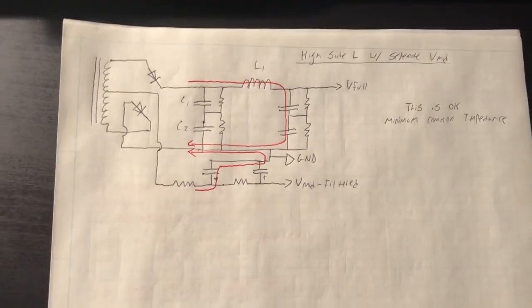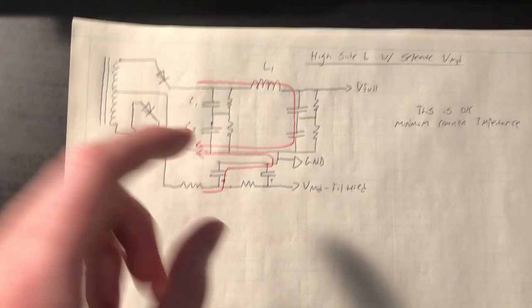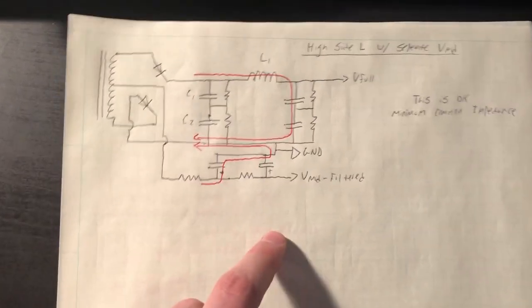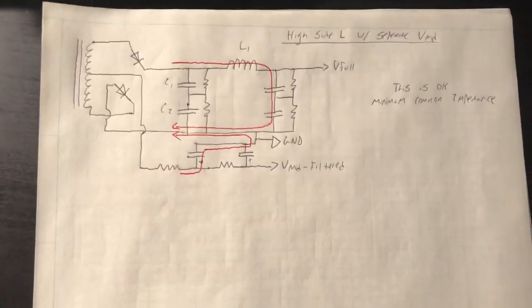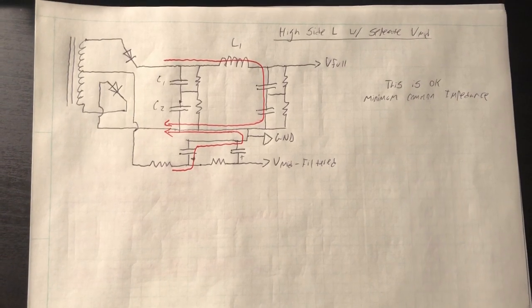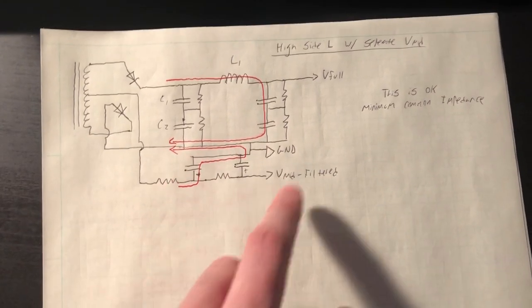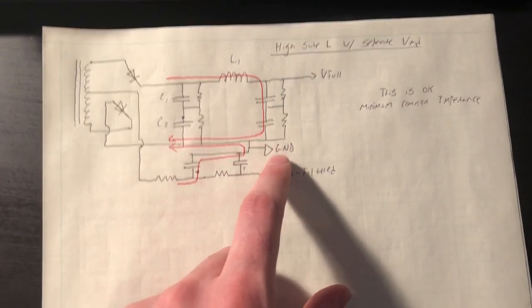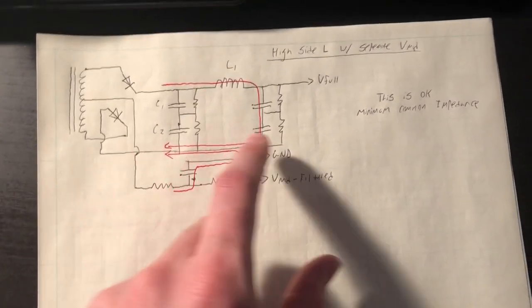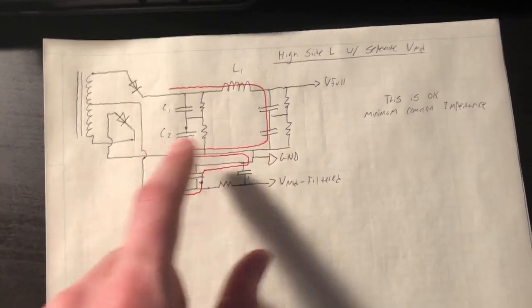The only way this arrangement really does work is if I move my inductor to the high side. So in that case, this arrangement will work, and you will get a half voltage and a full voltage. And you can filter this voltage relative to my ground point. And again, now this entire bus is ground. And the reason is, is I'm not sharing common impedance.